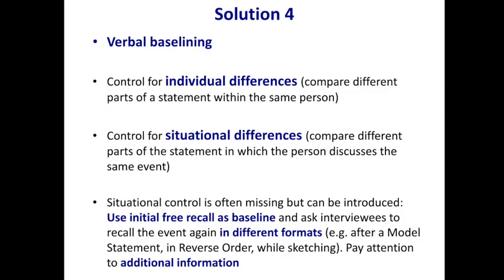We started doing that in our approach. We use the initial free recall as just a baseline — based on the 'tell me all you remember' question, we don't make any judgments yet, but that is the baseline. Then we move on by asking interviewees to recall the event again but now in different formats. For example, we say: 'Listen to this model statement' — a very detailed account of a topic unrelated to the investigation — and after that, please now recall the information again. That nearly always leads to more information. We look for additional information given after the model statement, and research shows this results in more complications from truth tellers than liars, and more information about the core event from truth tellers.